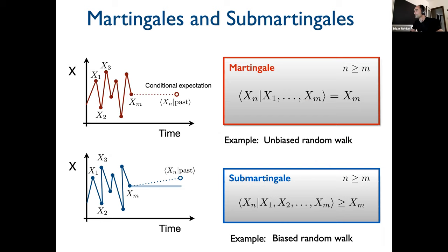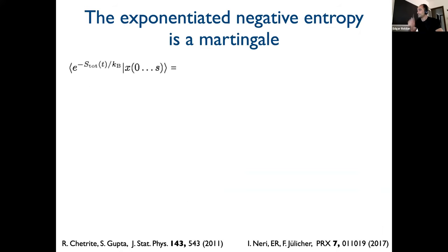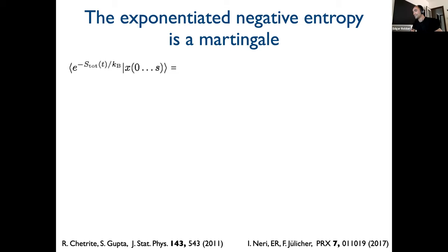There is also the so-called sub-martingale and super-martingale. Sub-martingale means it has positive drift — you expect in the future to be above your last observation, like a biased random walk. Now I will connect from this mathematical world to physics and stochastic thermodynamics. It was shown in a paper by Shétrit and Gupta, and also in our paper in a different way, that there is a martingale in stochastic thermodynamics, and it is the process e^{-S}, where S is the entropy production.